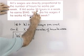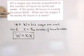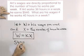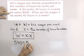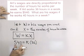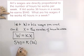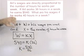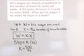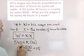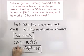If he works 36 hours in a week, he earns $540. So $540, his weekly wages, equals K times 36. Dividing both sides by 36, K equals 540 divided by 36, which comes out to be 15.